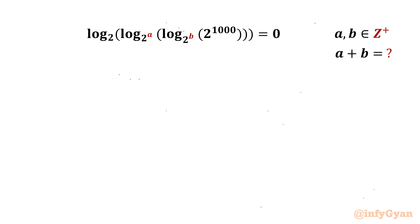Hello everyone, welcome back to Infigyan. In this video we are going to take up another very interesting question from math olympiads. The problem is: log base 2 of log base 2^a of log base 2^b of 2^1000 equals 0, where a and b belong to positive integers. We have to find the value of a plus b.